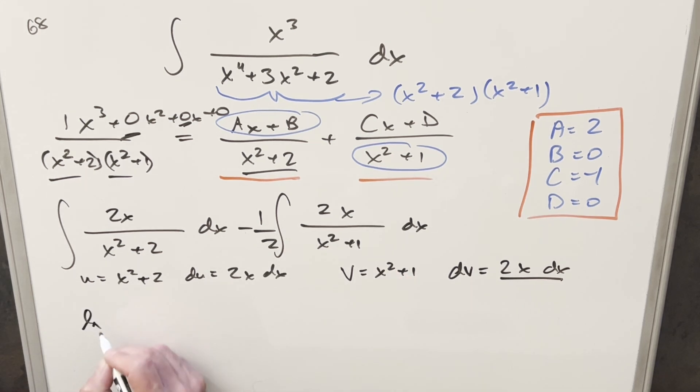So going ahead with this, we're just going to have natural log. I'm going to drop absolute value because this is always positive. So we're going to have natural log x squared plus 2 minus a half. And then here, same kind of thing. Again, drop the absolute value, natural log x squared plus 1.